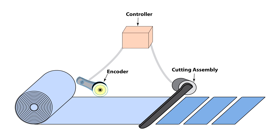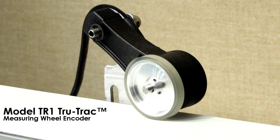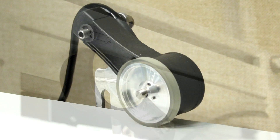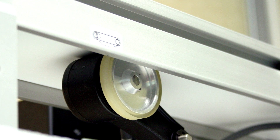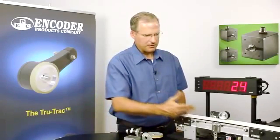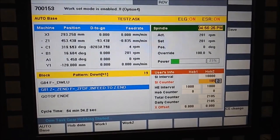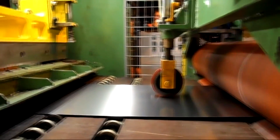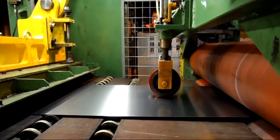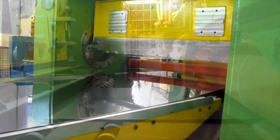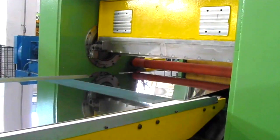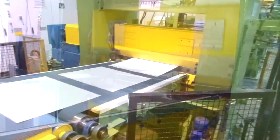In this cut-to-length application, we can see how elements of a motion system, including an encoder, work together. The movement of material under the measuring wheel rotates the encoder shaft. The encoder generates a square wave, which is sent to the controller. The controller receives and counts the pulses, and at a preset number, it activates the cutting assembly, which cuts the material to the proper length.